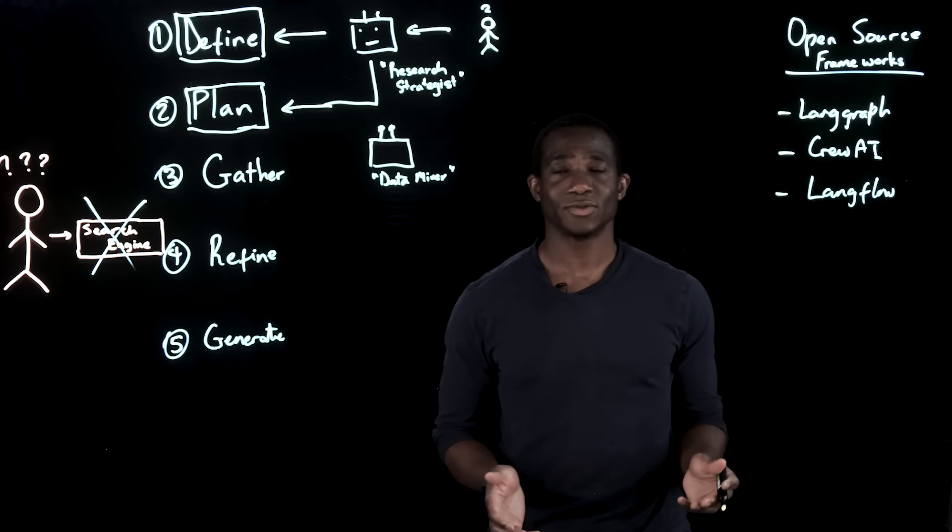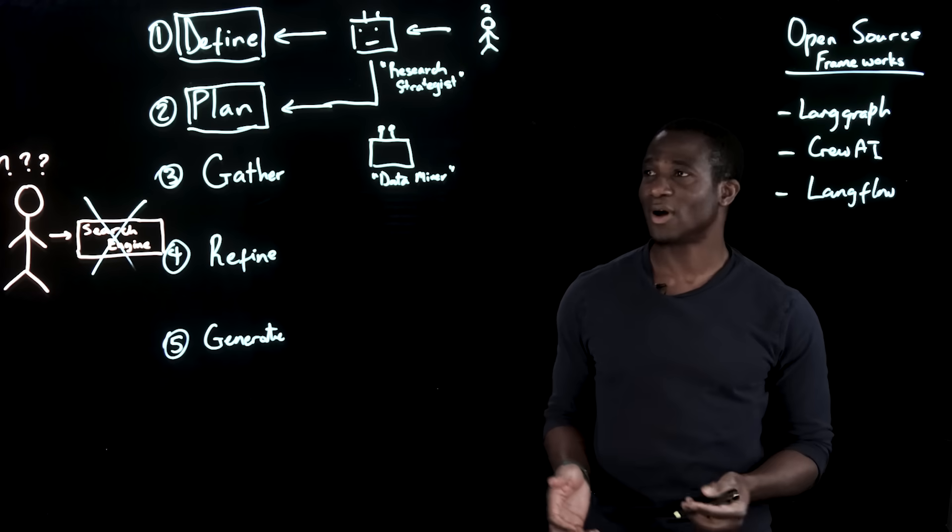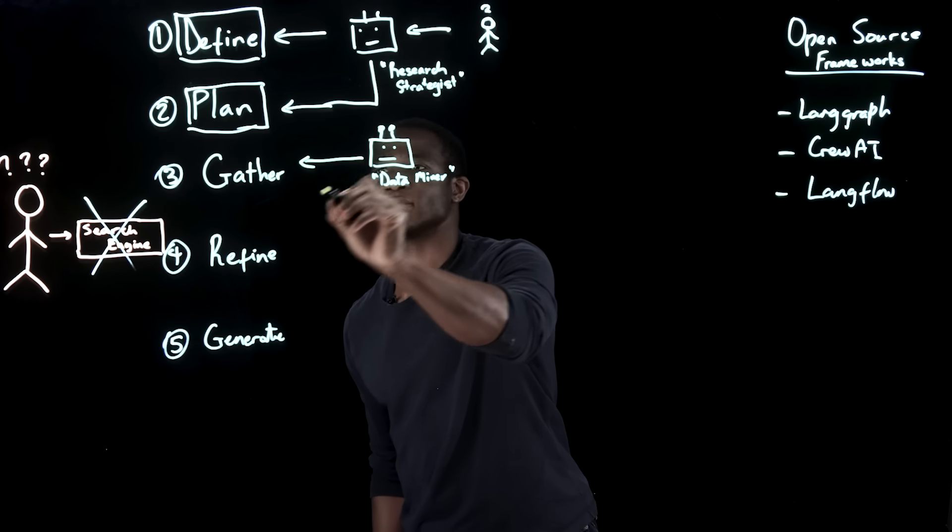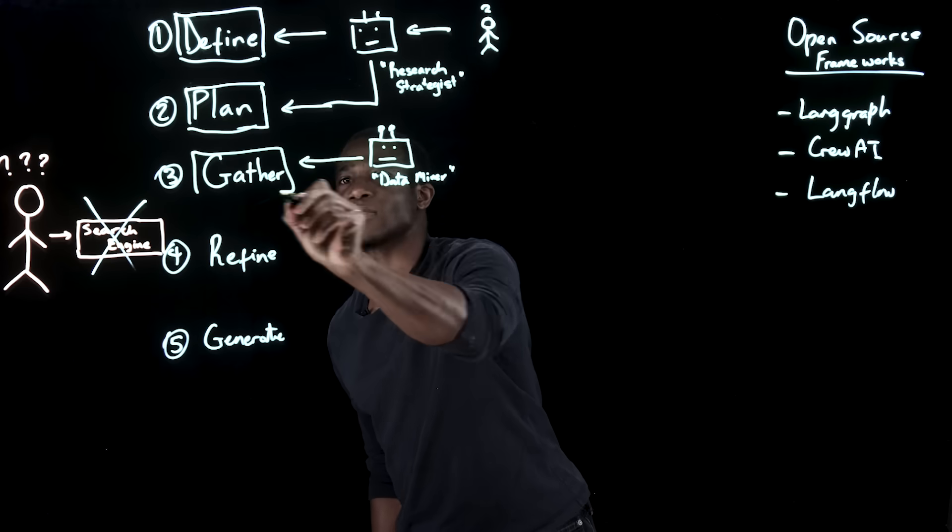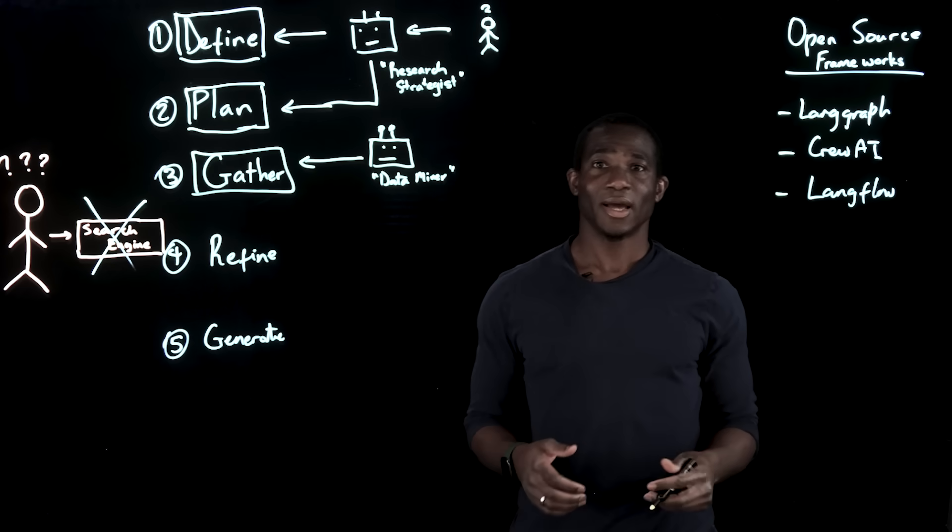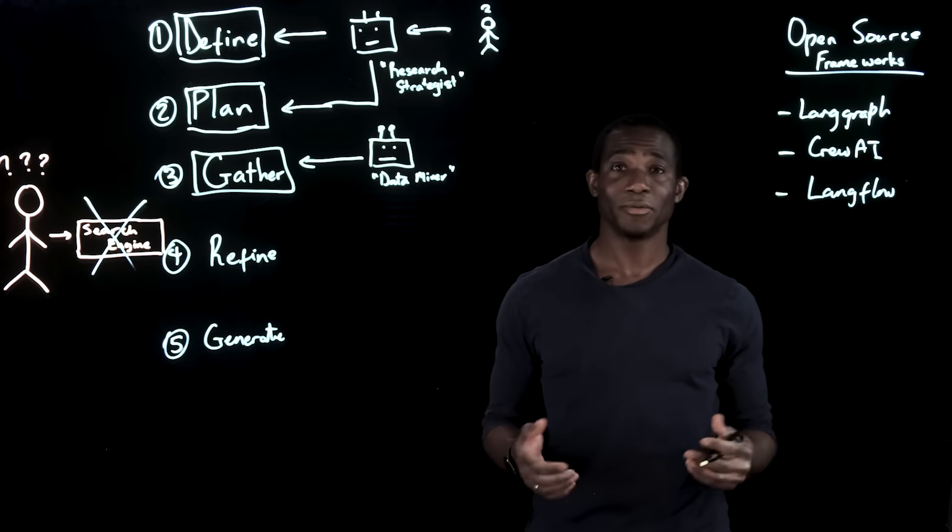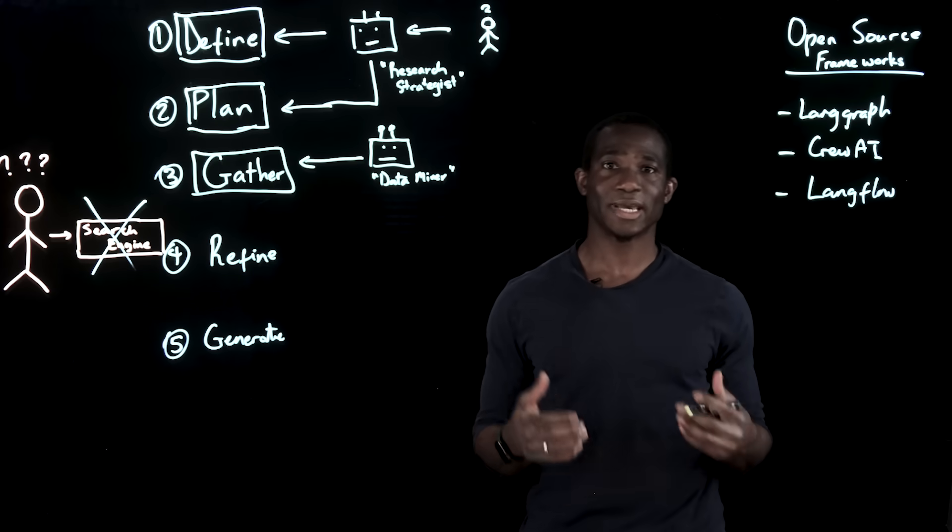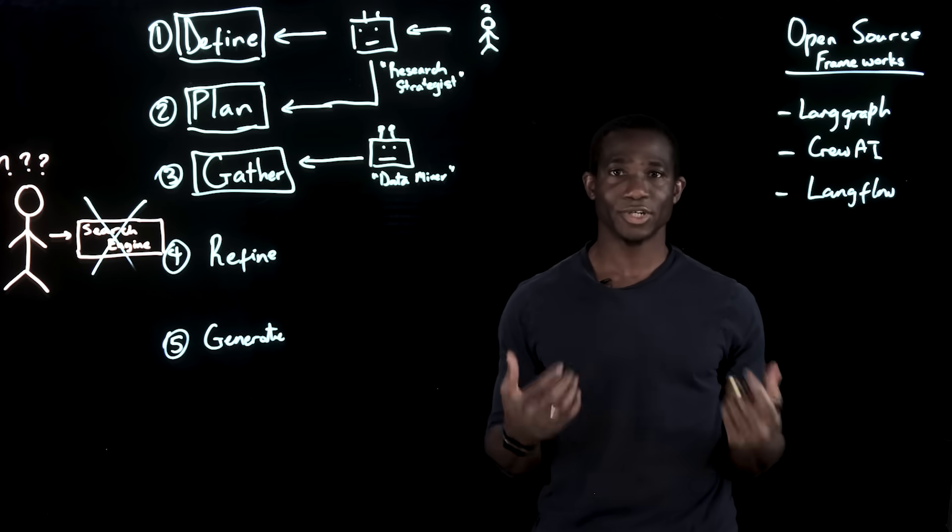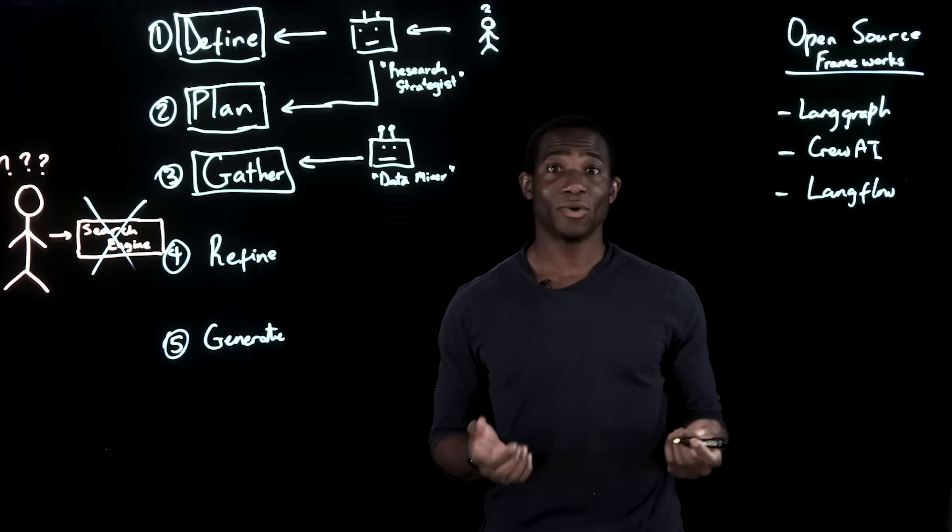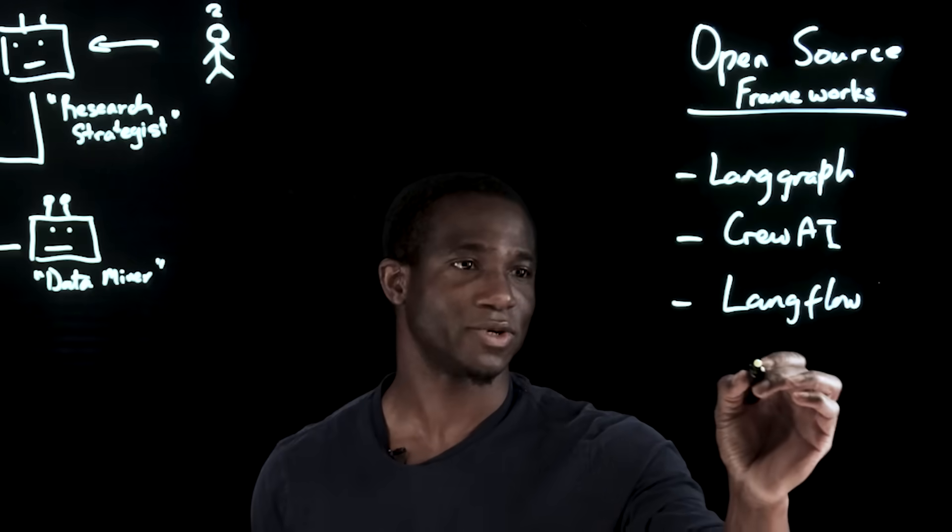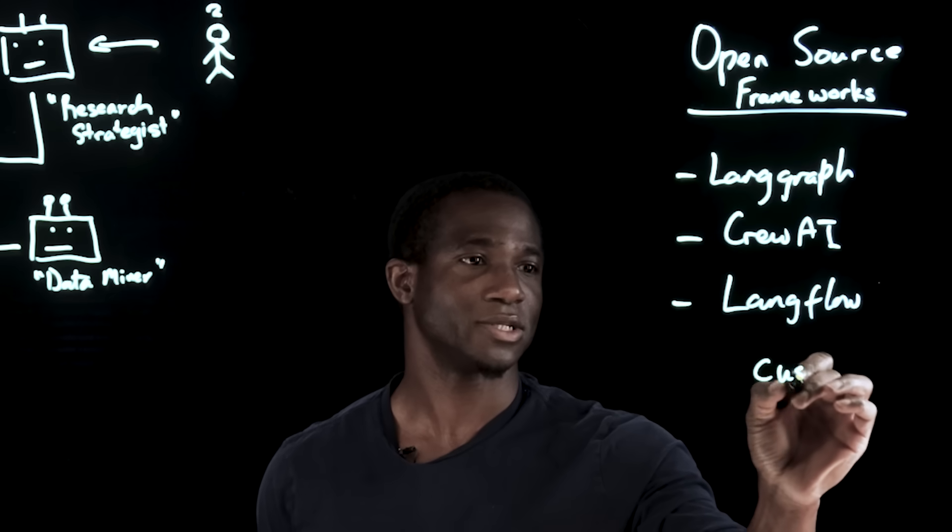This brings us to our all-important step of gathering data from various sources. Now the real research begins. A search agent or multiple retrieval agents can pull from academic papers, online databases, research repositories, or even structured API calls to your own internal knowledge sources, custom search tools.